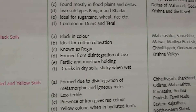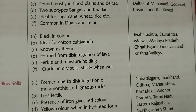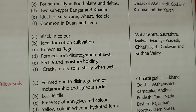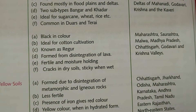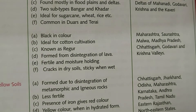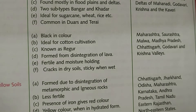In terms of location, black soil is found in Maharashtra, Saurashtra, Malwa, Madhya Pradesh, Chhattisgarh, and the Godavari and Krishna valleys. In terms of river deltas, it extends to the Mahanadi, Godavari, Krishna, and Kaveri deltas.